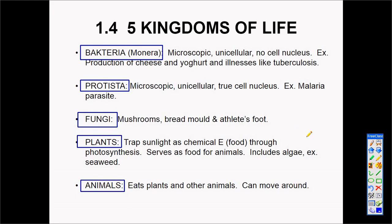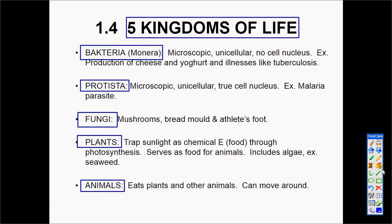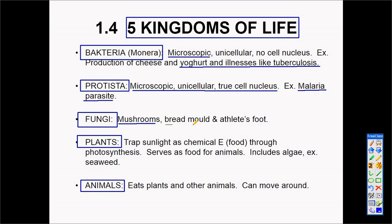Bacteria are microscopic and have no cell nucleus. They are used to produce cheese and yogurt. Remember, there are bad bacteria that can cause illnesses like lung diseases, but there are also good bacteria that help us produce yogurt and cheese. Protista include the malaria parasite, which belongs to the Protista family.